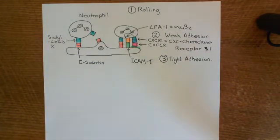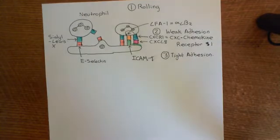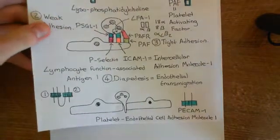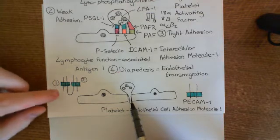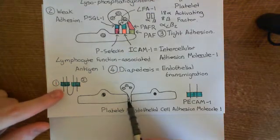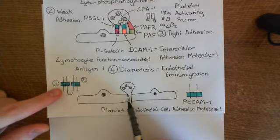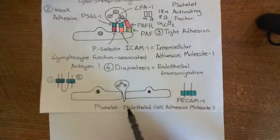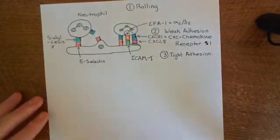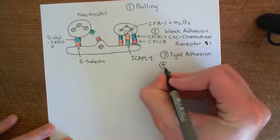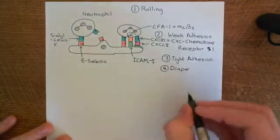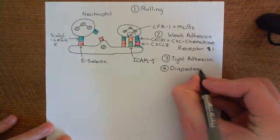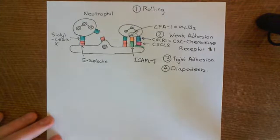The neutrophil will then diapedese across the endothelium, the same process as in type 1 activation. It squeezes through the gaps between the endothelial cells, which are now bigger following type 2 activation. As it squeezes through, it will form interactions with the PECAM-1 cell adhesion molecules on the surface of the endothelial cells. This will lead to the recruitment of more neutrophils into the interstitial space where the infection is, and these neutrophils will go and attack the pathogen, phagocytose it, and hopefully digest it to help clear the infection.